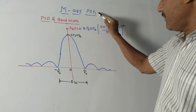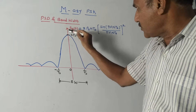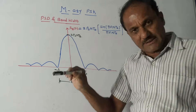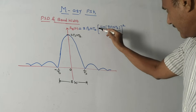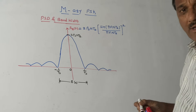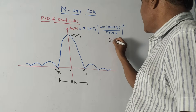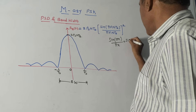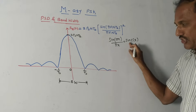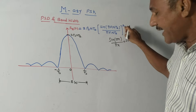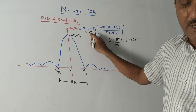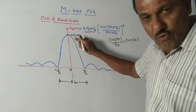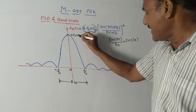Next is the power spectral density and bandwidth of M-ary PSK. The mathematical equation for PSD is 2Ps·n·Tb × [sinc(f·n·Tb)]². We know that if an equation has the form sin(πx)/(πx), it is the sinc function. So this is a sinc-squared function. The graph is a standard sinc-squared shape; at f = 0 the magnitude is 2Ps·n·Tb.